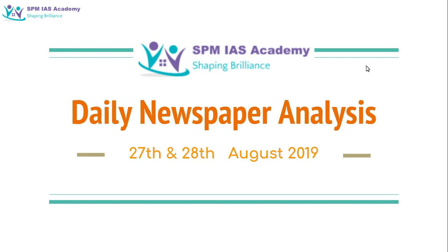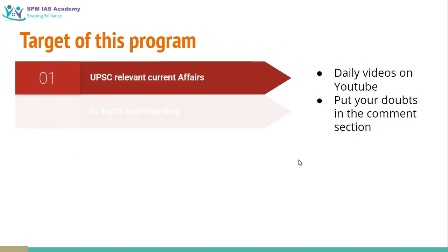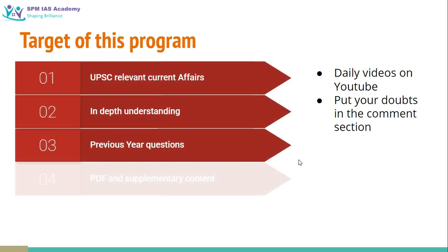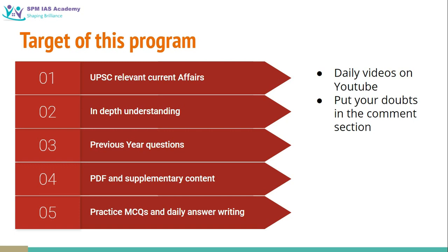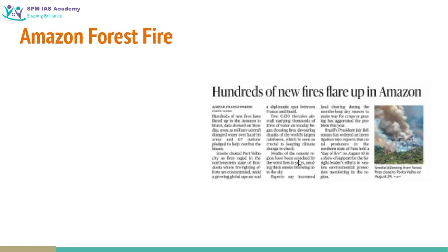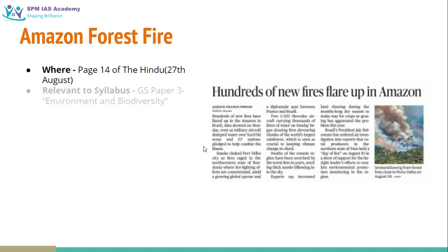Hello and welcome to SPMIS daily newspaper analysis. In today's session we will be taking up important issues of 27th and 28th August 2019. The target of this program is to discuss important issues from UPSC civil services exam point of view. The first article of the day is about Amazon forest fire, which came on page 14 of The Hindu on 27th August. It is relevant to the syllabus from GS paper 3 environment and biodiversity.